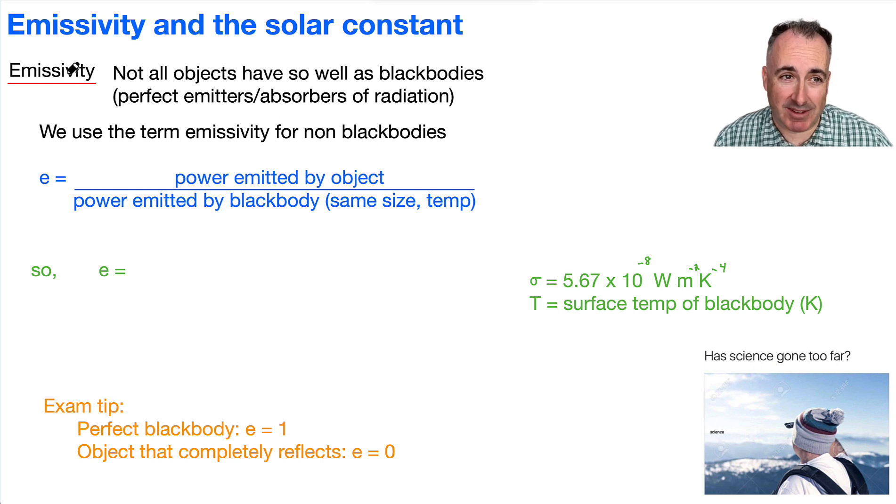All right, we've got this emissivity. This is an idea that not all objects actually behave as well as black bodies. They're not perfect absorbers or emitters of radiation. So instead, we use this term emissivity to describe things that are not black bodies.